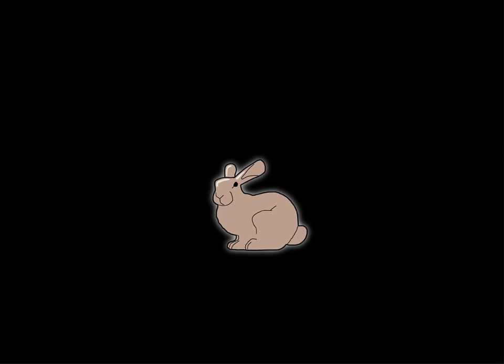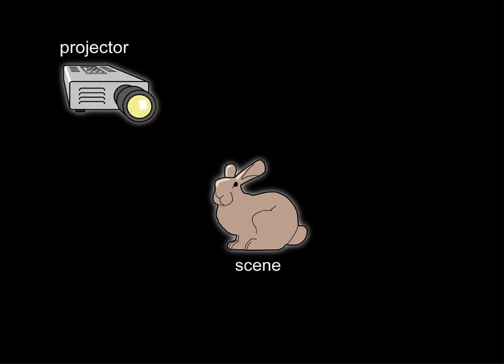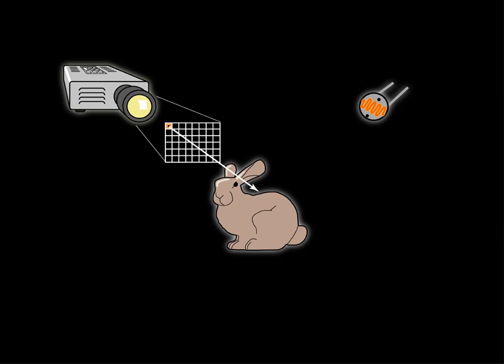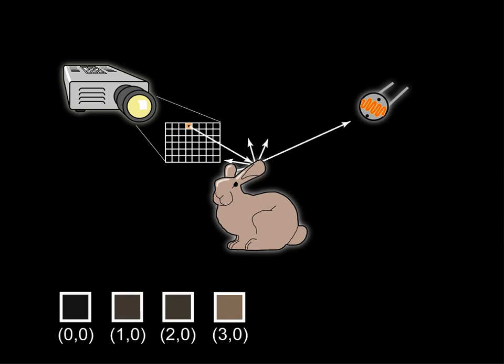A simple example will help us understand how dual photography works. This scene is illuminated by a projector and the outgoing light will be measured by a photosensor. Suppose we light up a single pixel at a time in the projector and store the value measured by the photosensor as a function of pixel location. We do this for all the pixels in the projector.